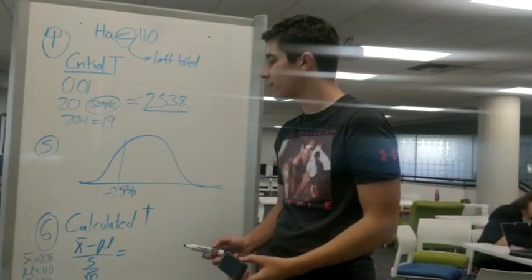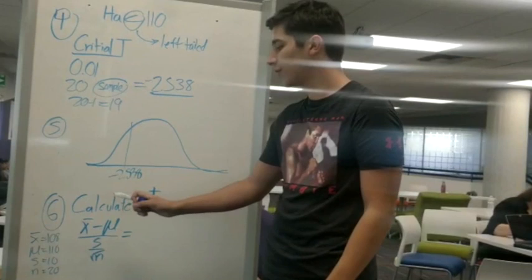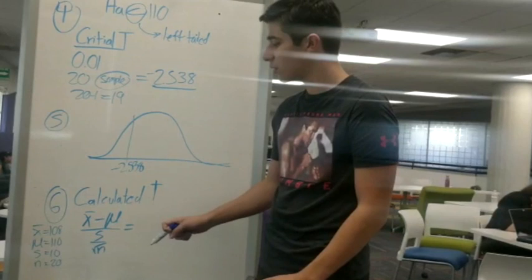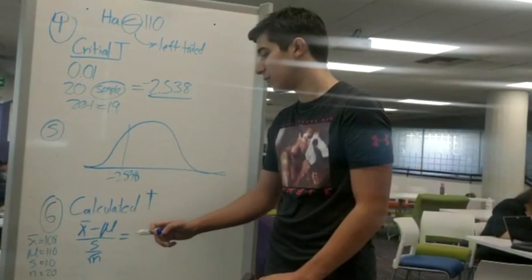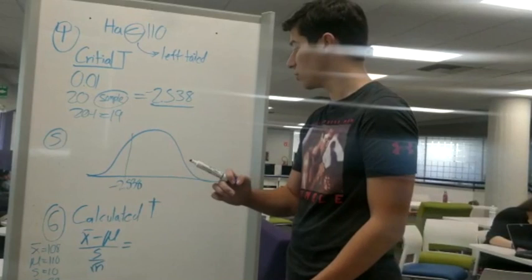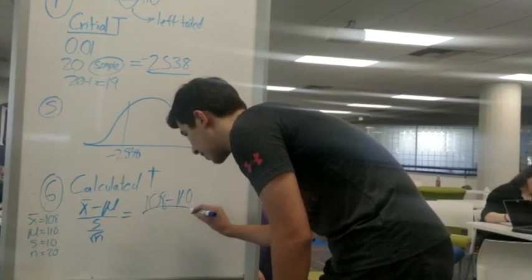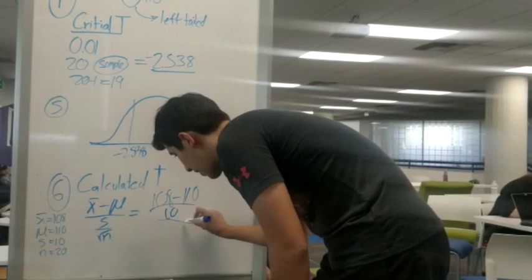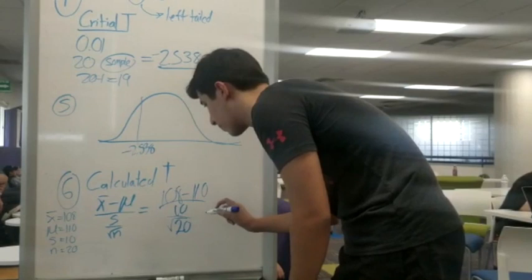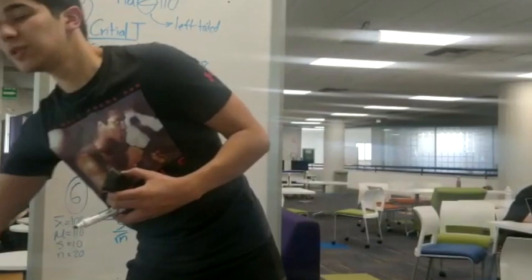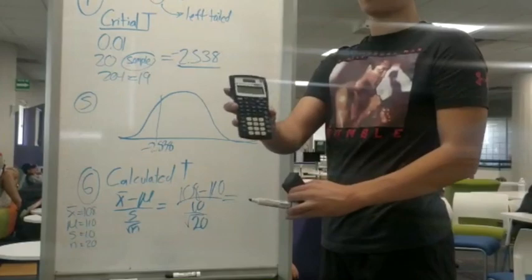So step number six is to find our calculated T. How do we find it? We have to use the formula. It's x bar, that is the sample mean, minus the mu, divided by the standard deviation of the sample, that will be also divided by the sample number in its square root. So, it will be 108 minus 110, divided by 10, divided also by the square root of 20. That is our number of students that participated in the sample. That will make it equal to negative 0.89442.